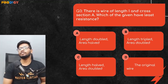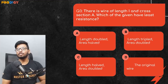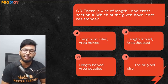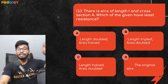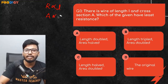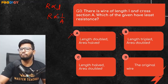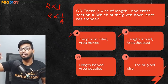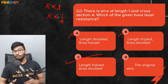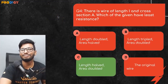Question 3: A wire has length L and cross-sectional area A. Which option gives the least resistance? Options: length doubled, area halved; length tripled, area doubled; length halved, area doubled; or the original wire. Since R ∝ L and R ∝ 1/A, doubling length increases resistance, and tripling length still gives high resistance even with doubled area. The correct answer is option C — halving the length and doubling the area gives the least resistance.